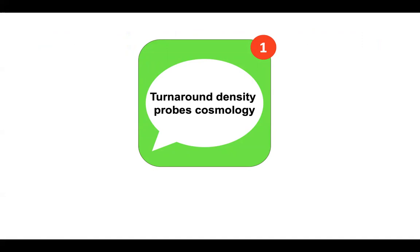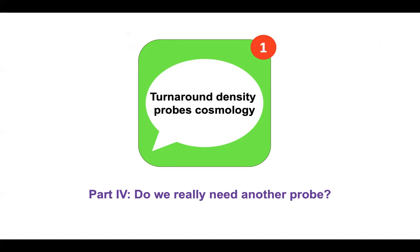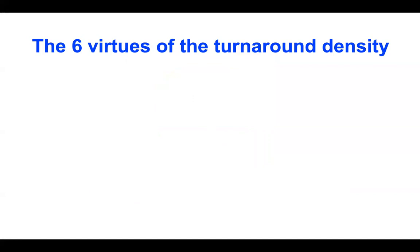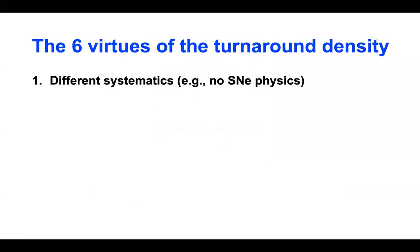This brings me to part four: do we really need another cosmological probe? We compiled the six virtues of turnaround density as a cosmological probe. Virtue number one: obviously different systematics — no supernova physics required. It makes a different-shaped blob on the omega matter–omega lambda plot with completely different systematics than all other probes. It probes lambda without needing to understand how supernovae work.